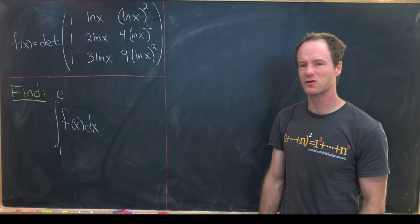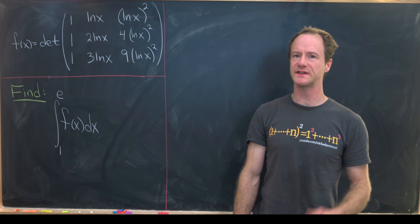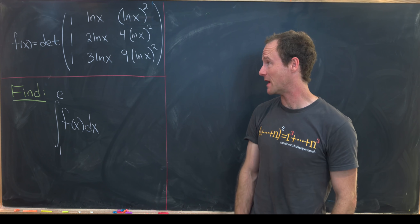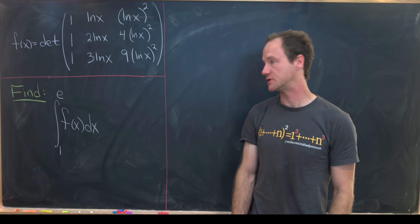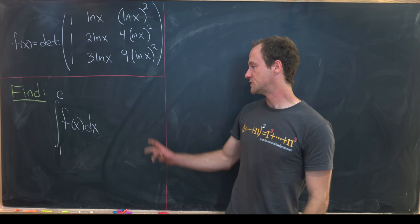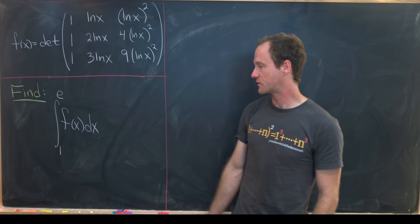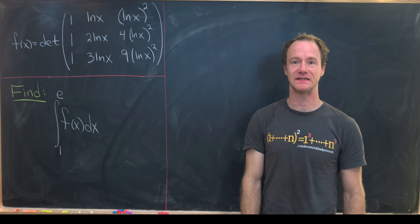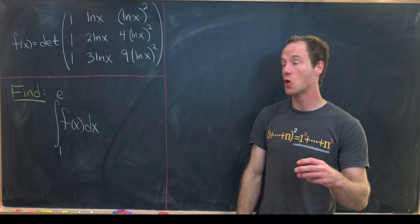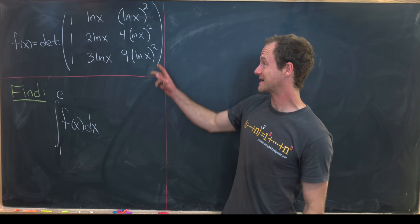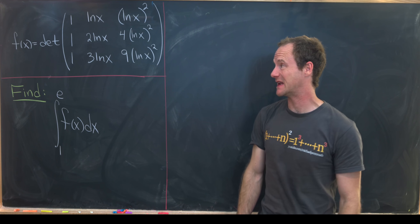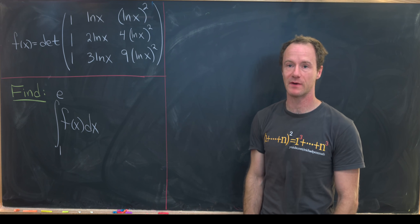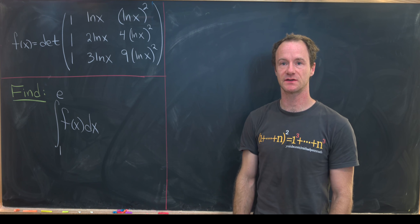Here we've got a nice integral that looks pretty scary at first, but really isn't that bad once you get down to it. We want to find the integral from 1 to e of f(x) dx, where f(x) is defined as the determinant of a 3 by 3 matrix.